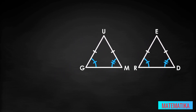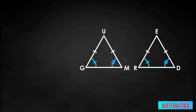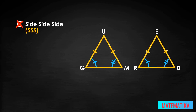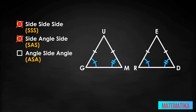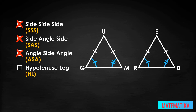Going through our toolbox full of triangle congruence testing methods, we can try each. Side-side-side, SSS — that won't work because we do not know about all three sides. Side-angle-side, SAS — that won't work either because we know two angles, not two sides. Angle-side-angle, ASA — this looks promising at first, but the side we know about is not an included side, so not this one. Hypotenuse-leg, HL — this is reserved for right triangles, which we don't have, so not this one.